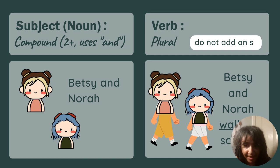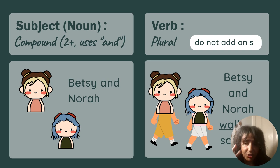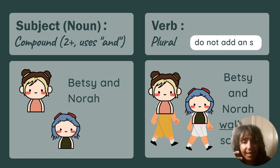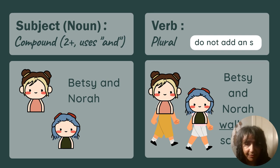Here's another way to think about it. If we can separate the two subjects: 'Betsy walks to school' — we would put an S. But once we put two of them together, we no longer need the S. So it would be 'Betsy walks to school,' 'Nora walks to school,' but when we add both of them together with the word 'and' — 'Betsy and Nora walk to school' — we would take the S off the end of the verb.